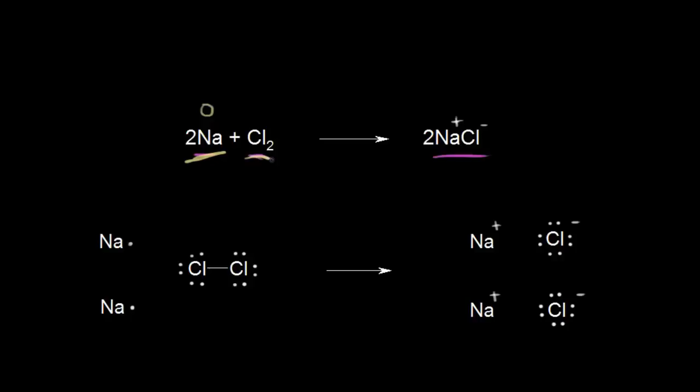For chlorine, each chlorine atom is also an atom in its elemental form, and therefore each chlorine atom has an oxidation state equal to zero. Going over to the right, the sodium cation has a plus one charge. For monatomic ions, the oxidation state is equal to the charge on the ion, so since the charge is plus one, the oxidation state is also plus one.